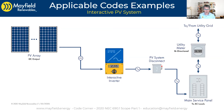Very often you're going to have multiple code sections apply. If you have energy storage — which we'll talk about in great depth later — you're going to have some 706 requirements and other code sections. 705 comes into play as well; 705 is the utility interconnection, so there are some components there.